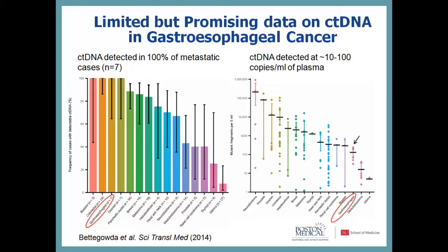So far there's very limited data on esophageal adenocarcinoma. This is data from a recent Hopkins paper in 2014. They looked at a set of 21 patients with gastroesophageal cancer — actually a mixed bag of three different tumor types: esophageal adenocarcinoma, gastric cancer, and esophageal squamous cancer, which is a very different disease.